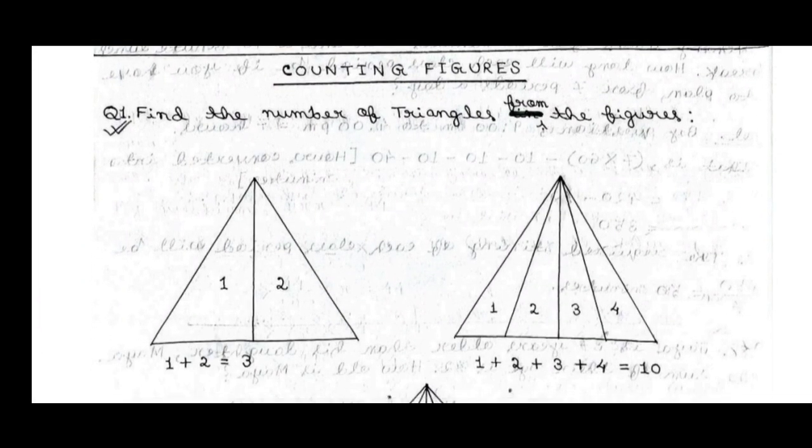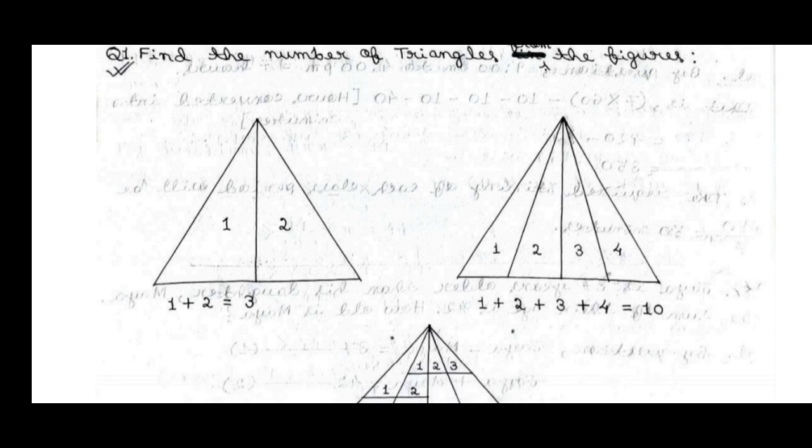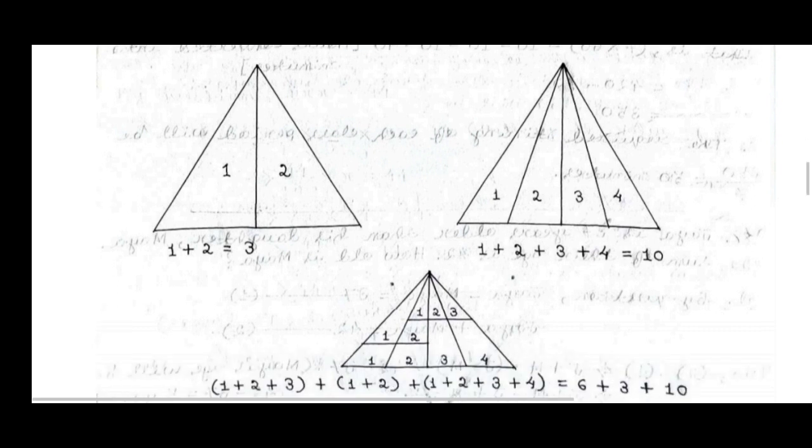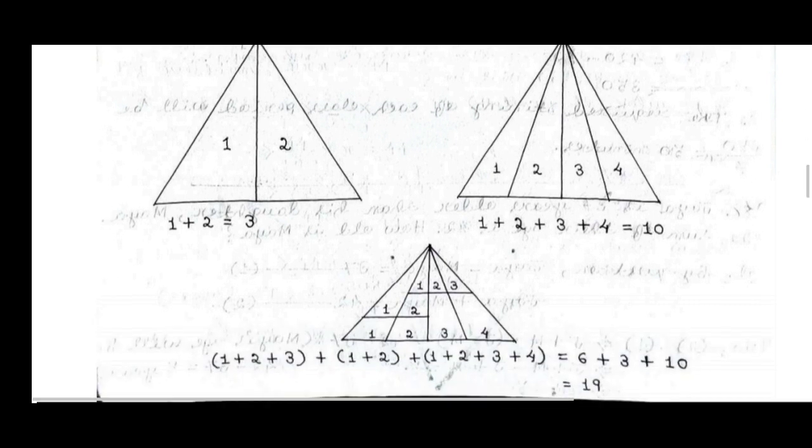Here you can see, for example, counting figures. This is the reasoning type — critical reasoning. Finding the number of triangles from the figures. Here is a figure of triangles: the first triangle, the second triangle. One plus two equals three triangles total overall.